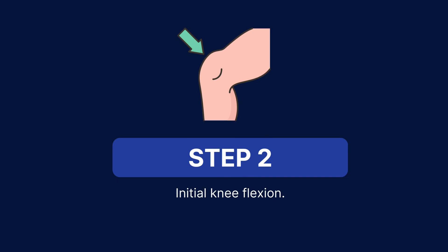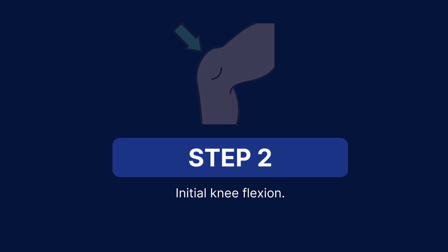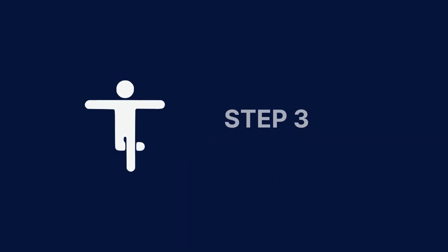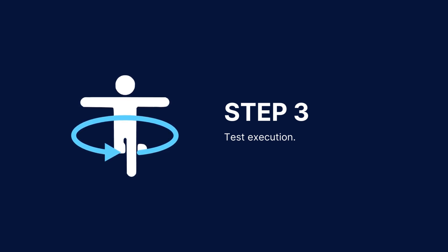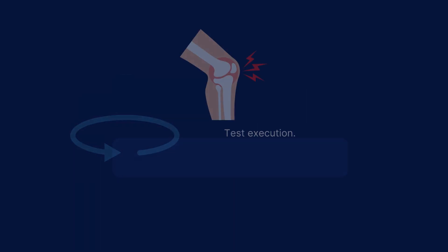Next, the examiner instructs the patient to flex their knee to approximately 20 to 30 degrees. The examiner stands behind the patient and holds their hands for stability. The patient is asked to rotate their body towards the tested knee, keeping the foot planted on the ground.